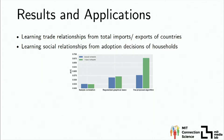This is our method — let me show you some results and you can think about how this can benefit your businesses. The first example is learning trade relationships based on the total imports and exports of different goods among different countries, so that we can infer trade relationships among countries. Another example is learning social relationships based on the adoption decisions of different households — by observing what utilities they purchase, whether they adopt microfinance or not, we can learn the relationships among households.